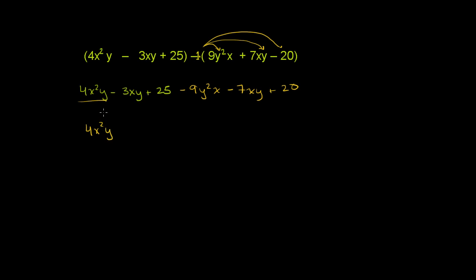Now is there another xy term? Yeah, there is. So we can group negative 3xy and negative 7xy. Negative 3 of something minus another 7 of that something is going to be negative 10 of that something. So it's negative 10xy.